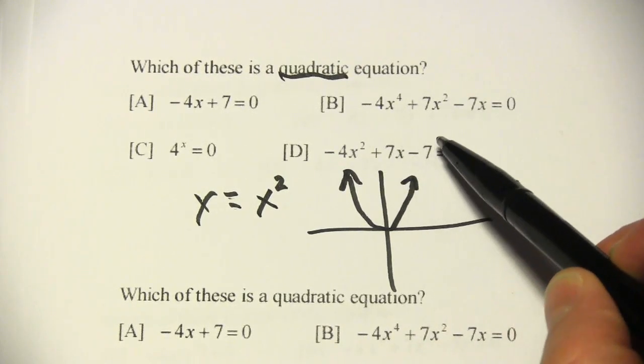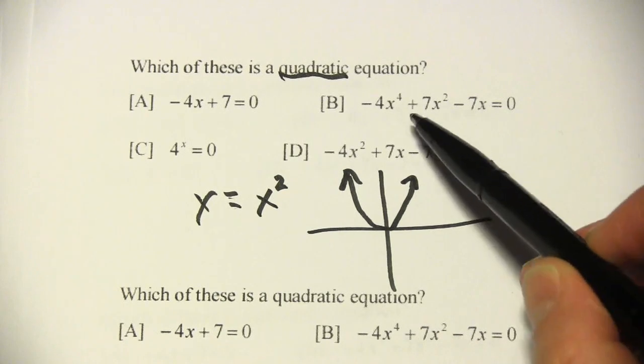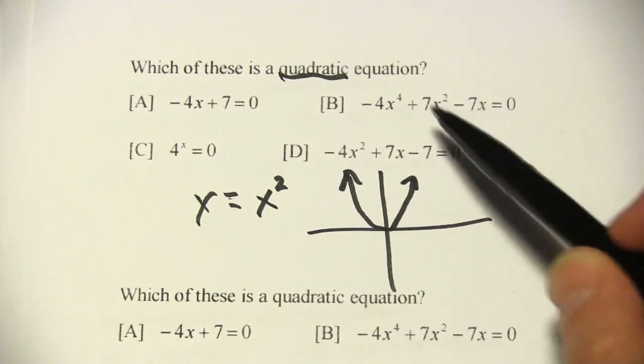Here we have negative 4x to the fourth plus 7x squared. That does have an x squared, but the highest power is 4x to the fourth, so that's not a quadratic.